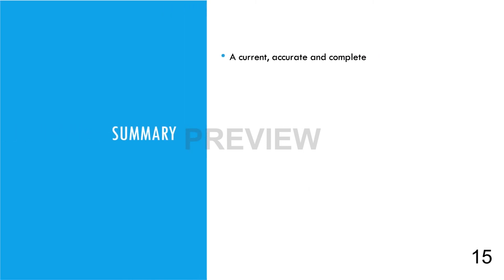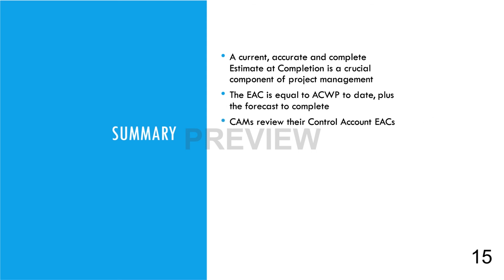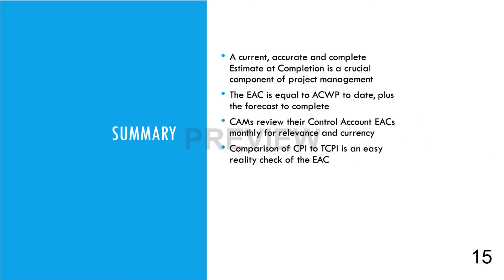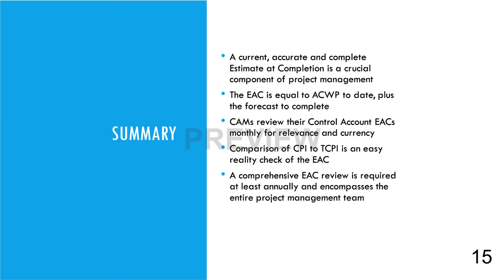In summary, a current, accurate, and complete Estimate at Completion is a crucial component of project management. DOE depends on its accuracy to manage funding. The EAC is calculated by adding the actual costs incurred to date plus the forecast of cost, or ETC, to complete the remaining work scope. The CAMs are required to review EACs for their control accounts monthly for relevance and currency. The primary driver for changing the forecast of costs is realization that the current ETC is no longer realistic, and a comparison between the CPI and TCPI can be a quick and easy reality check of the EAC.